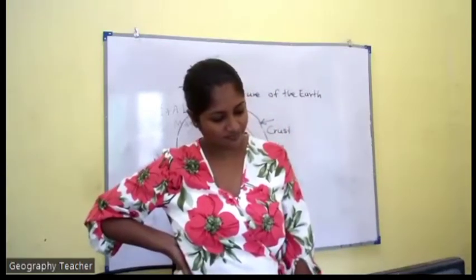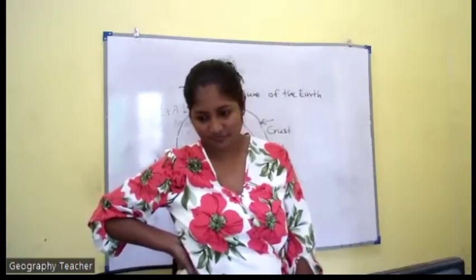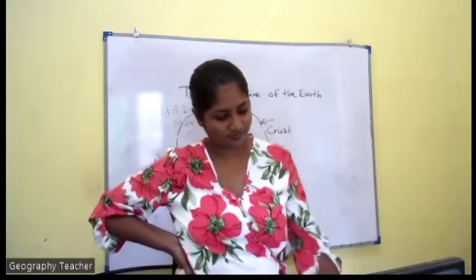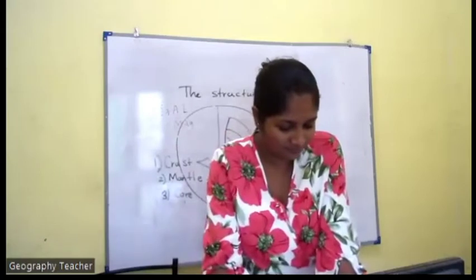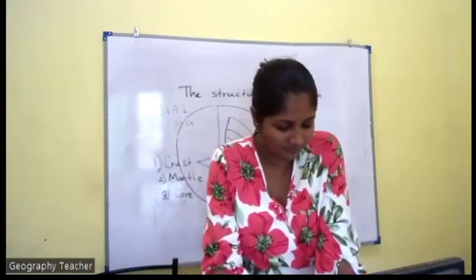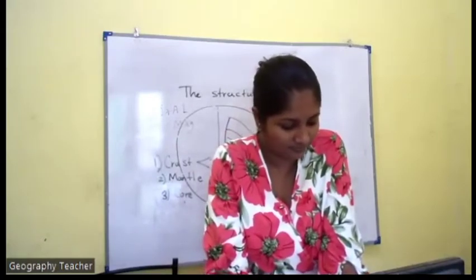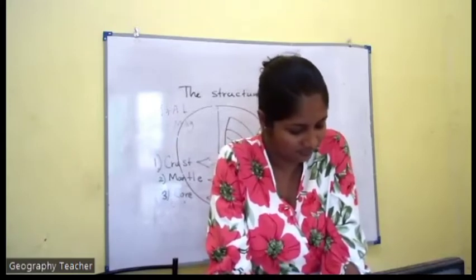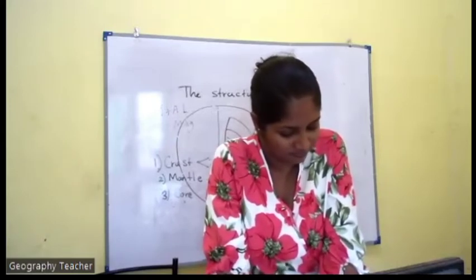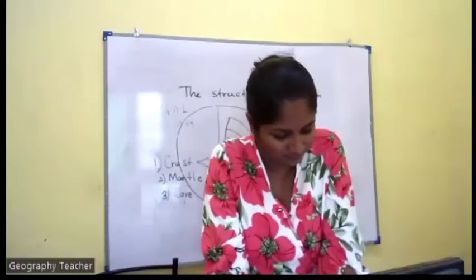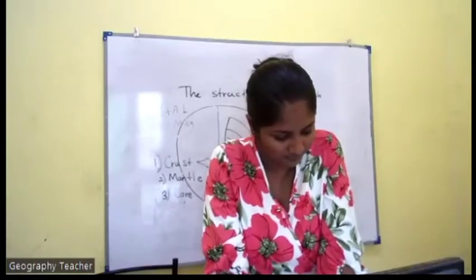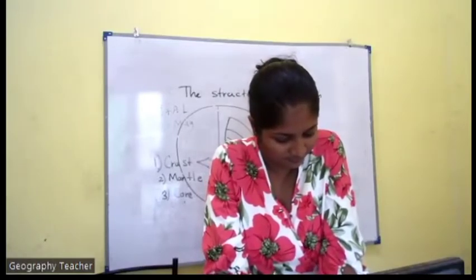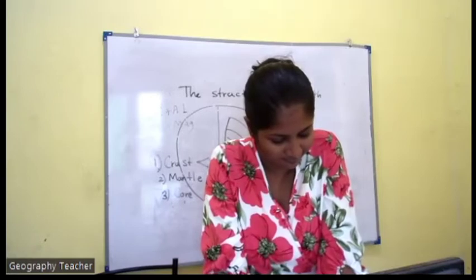The mantle layer is between the crust and the core. According to the chemical composition, the mantle can be divided into two parts: upper mantle and lower mantle. The upper mantle is formed with olivine and silicate. The lower mantle is made up of magnesium and silicate. The boundary that separates the mantle from the core is known as the Gutenberg discontinuity.